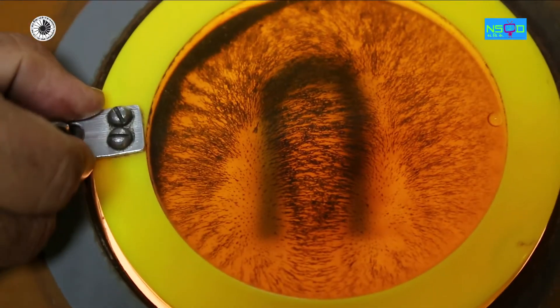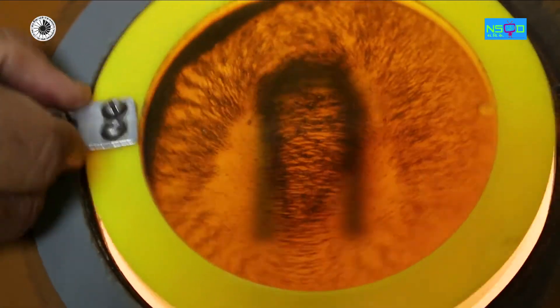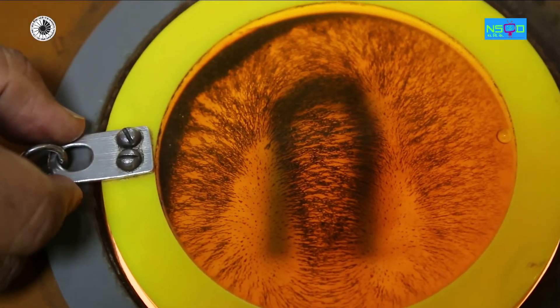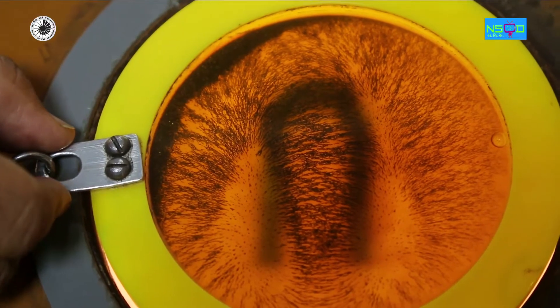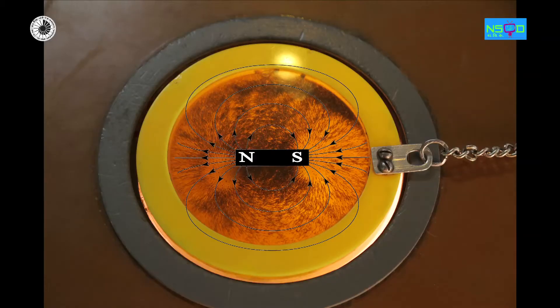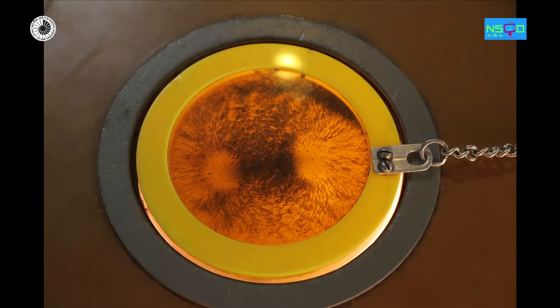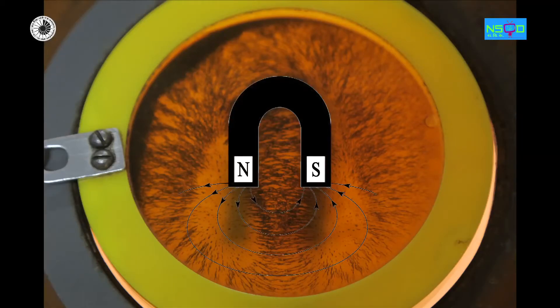When the disc of iron filings is brought near a magnet, each individual iron filing behaves like a tiny magnet and aligns itself according to the magnetic field. The pattern thus formed is in accordance with the magnetic field and is similar to the shape of the magnet beneath.